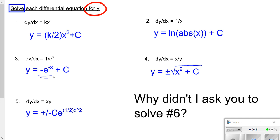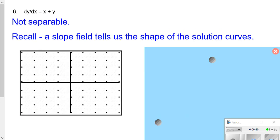Why didn't I ask you to solve number 6? Number 6 is still a differential equation, but it is not separable. Could I see this on my AP exam? Yes, I could — however, I would not be asked to solve it, because the techniques for solving a non-separable differential equation extend beyond the scope of this class.